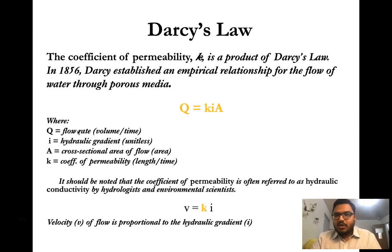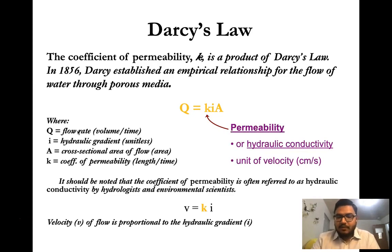The coefficient of permeability is a product of Darcy's law: Q equals k times i times A. Here k is the coefficient of permeability, often referred to as hydraulic conductivity by hydrologists and environmental scientists. The unit of permeability is centimeter per second, meter per second, or feet per second.